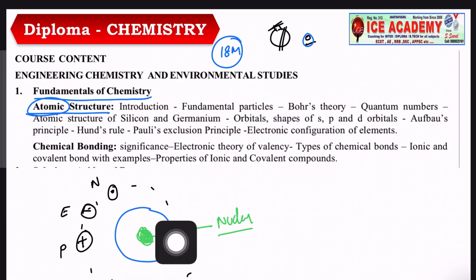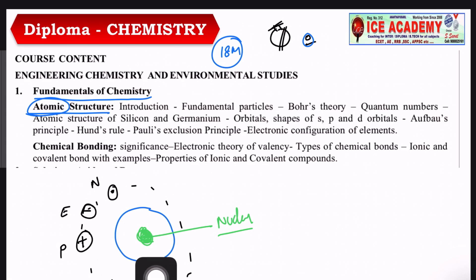So what is an atom? It is an undividable piece of any substance. If you have an apple or paper, you can cut it into smaller and smaller pieces until you reach the atom.